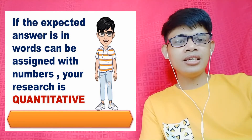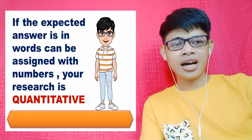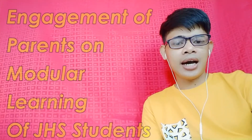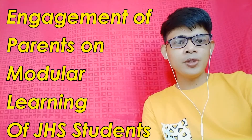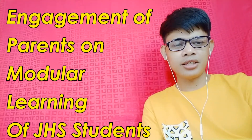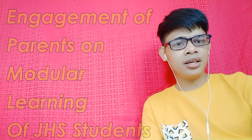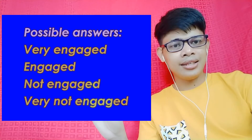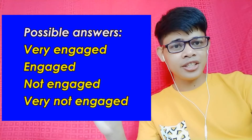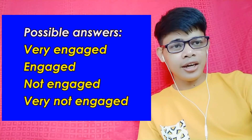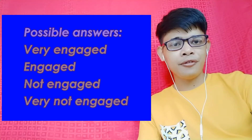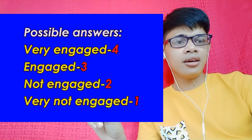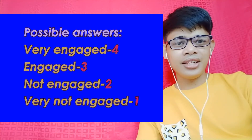For example, if the answer to your research title is in words but can be given specific numbers — just like the question: 'What is the engagement of parents in the modular learning of junior high school students?' — your answer would be: very engaged, engaged, not engaged, or very not engaged. These are words, but we can still assign numbers: very engaged is 4, engaged is 3, not engaged is 2, and very not engaged is 1.